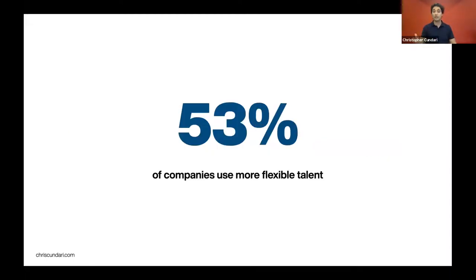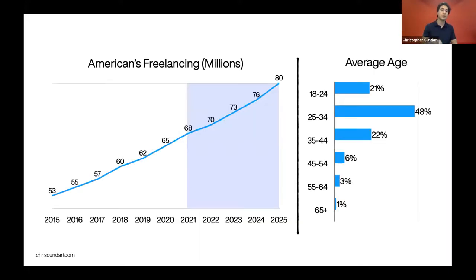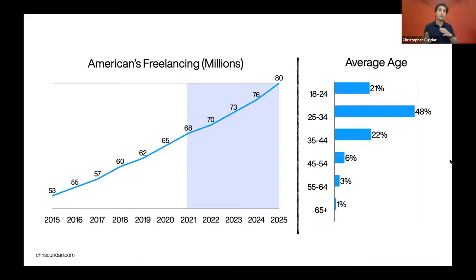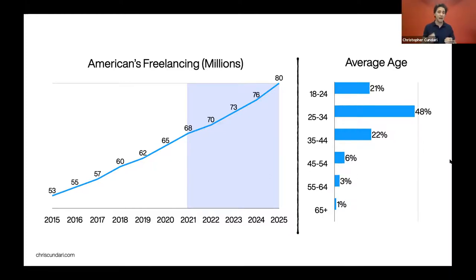Right now, 53% of companies and nonprofits have moved to more flexible talent. In America, from 2015 to 2020, there has been a 20% increase in freelancers, and that's expected to go up to 80 million by 2025. This is a substantial amount of the workforce. A lot of these freelancers tend to be younger — in the 25 to 34 age group — looking for more flexibility on where and when to work, choosing which projects to work on. This is a complete shift in how businesses operate, who they hire and how they hire them. Having the knowledge to understand how to leverage this workforce will be critical.